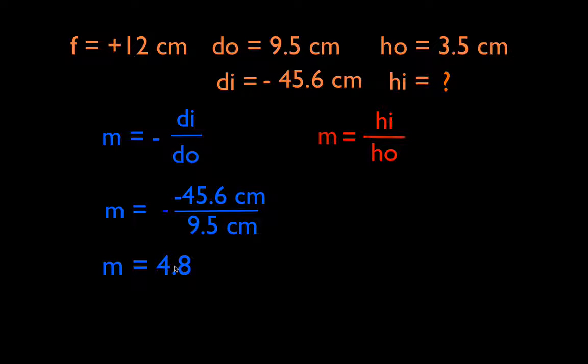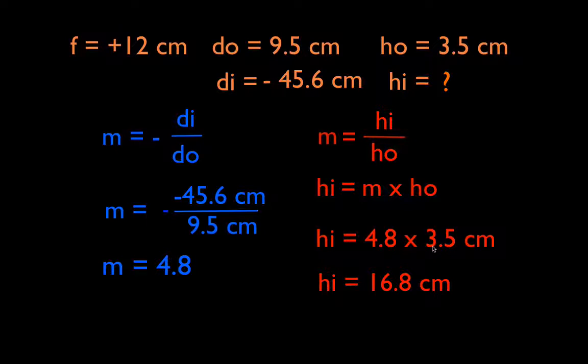But in order to actually calculate the image height, we have to use the other magnification equation, which is Hi over Ho. We're going to rearrange this to solve for the Hi. The image height is m times the object height. If we plug the numbers in, our magnification is 4.8, our object height is 3.5 centimeters, and we get that the image is 16.8 centimeters tall.